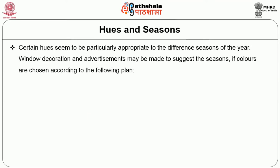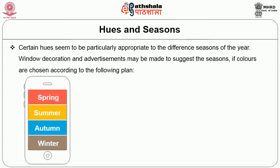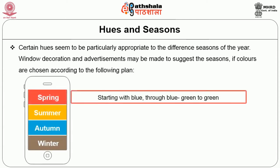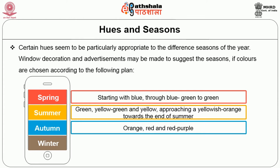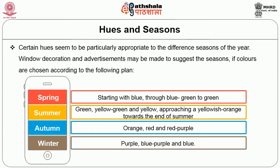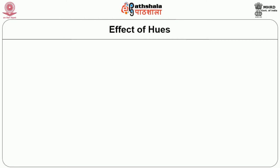Hues and seasons. Certain hues seem to be particularly appropriate to the different seasons of the year. Window decoration and advertisements may be made to suggest the seasons if colors are chosen according to the following plan: Spring — blue through blue-green to green; Summer — green, yellow-green and yellow, approaching a yellowish orange towards the end of summer; Autumn — orange, red and red-purple; Winter — purple, blue-purple and blue.